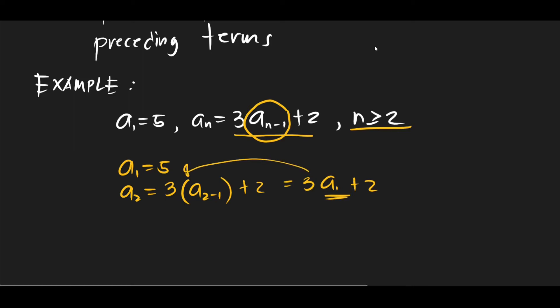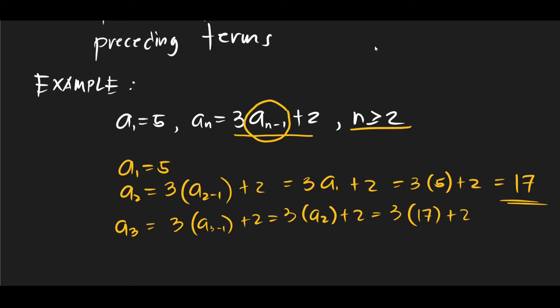So a1 here is this, right? Our first term. So a1, you can then get 3 times 5 plus 2, and you will get 17. Okay, so that is our a2. How about our a3? 3 times a3 minus 1 plus 2. So you'll get 3 times a2 plus 2, which is 3 times a2 is 17, right? So 17 plus 2. So 17 times 3, that would be 51, so that would be 53. So this is how you find the succeeding terms of sequence using a recursion formula.